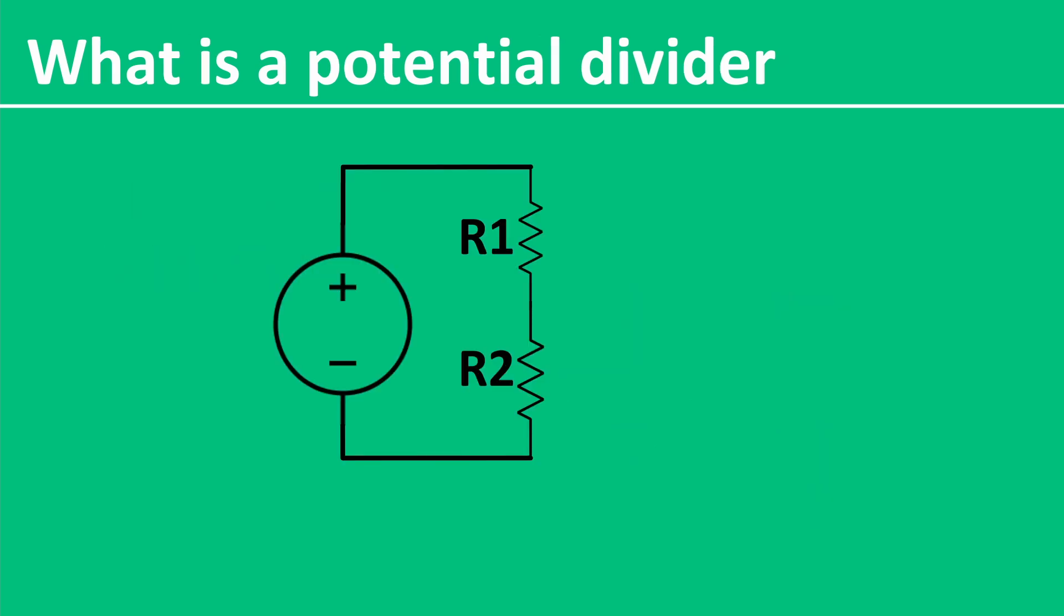Now, here's where things get interesting. If we connect a load to the center point of R1 and R2, the load is now in parallel with R2, and thus decreases the resistance.